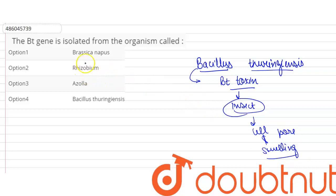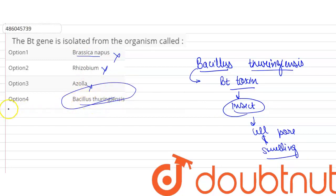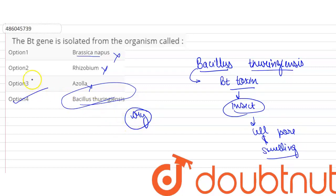Now we will see the options: Brassica napus? Rhizobium? Azolla? The answer is Bacillus thuringiensis — we can isolate the BT gene from it. This is a cry gene which is called BT toxin, also known as BT gene.